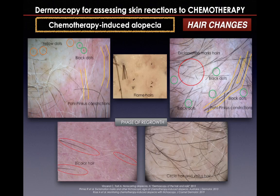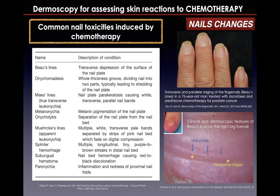Pohl-Pinkus constrictions are visible all along the treatment phase, while black and white hair, circle hair, and vellus hair are observed during the prolonged or post-chemotherapy phase as an expression of re-growing anagen hair.